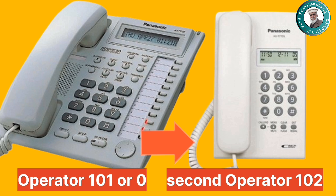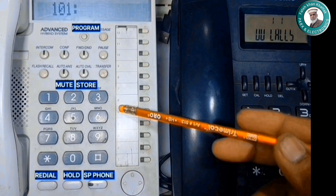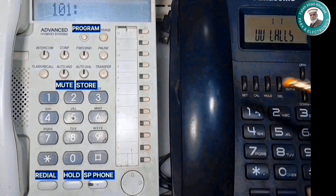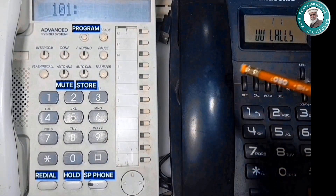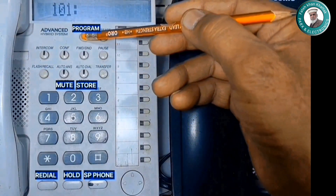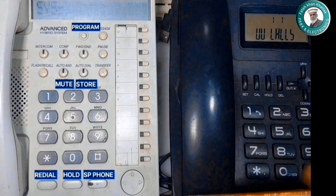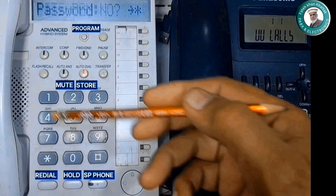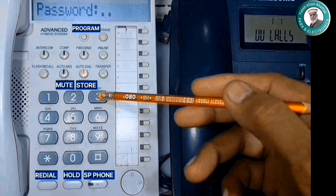If the operator is busy, the call will have an automatic transfer to the second operator. Now let's start programming. This is an operator set at extension 102. We'll create a hunting group of these two. Press the program button without lifting the handset to go to programming. Password: star hash 1 2 3 4.